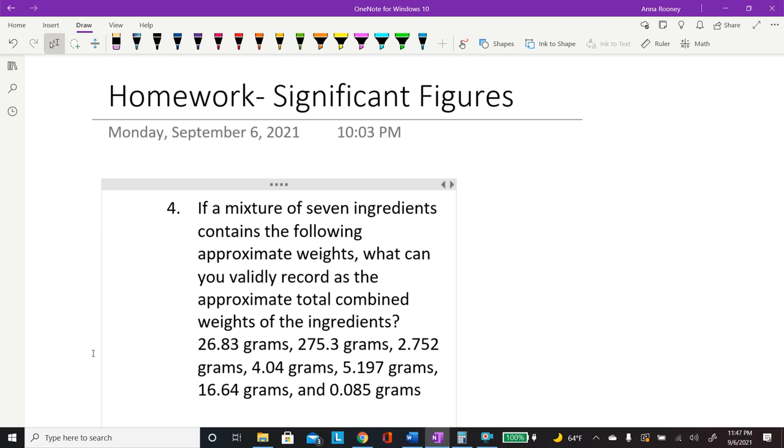Before I do that, I'm recording this for University of Toledo's PHPR 3010, fall 2021. If a mixture of seven ingredients contains the following approximate weights, what can you validly record as the approximate total combined weights of the ingredients?